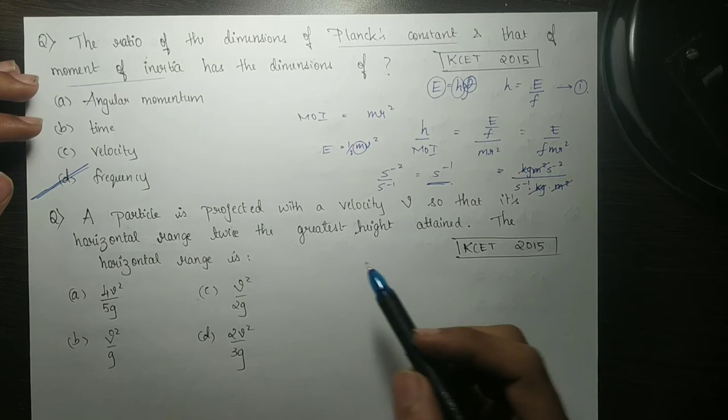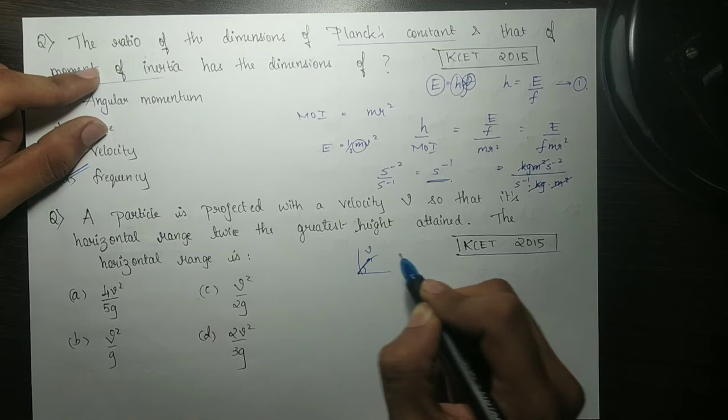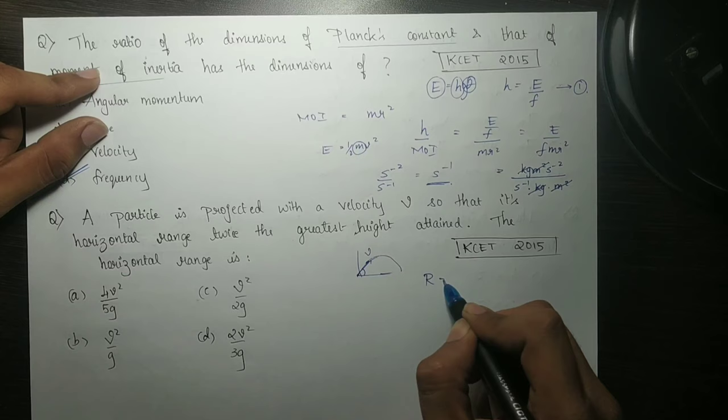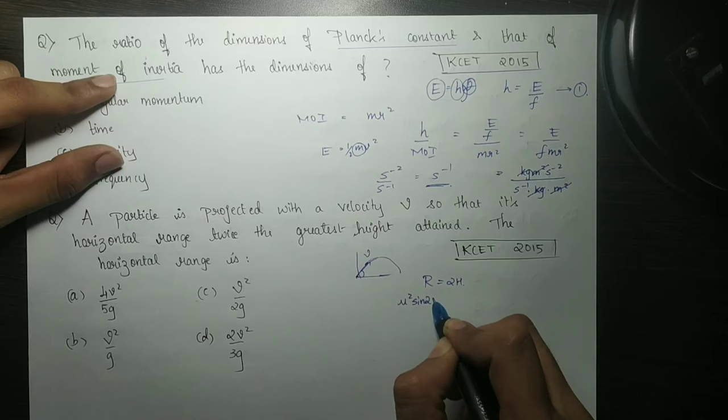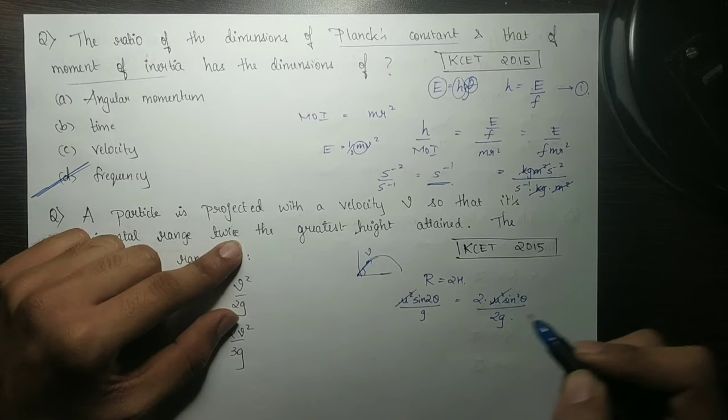Particle is projected with a velocity V so that its horizontal range is twice the greatest height attained. Horizontal range, what do you want to say? Particle is projected at an angle with velocity V. Horizontal range twice the greatest height. R is equal to 2H. R formula U squared sin 2 theta by G equal to 2 times U squared sin squared theta by 2G. You already know U squared cancel, G cancel, 2 sin theta cos theta.